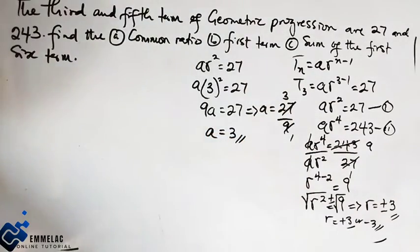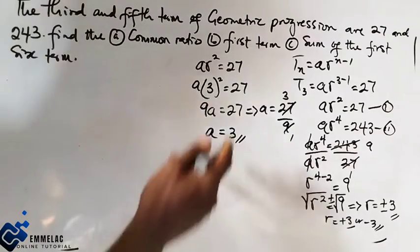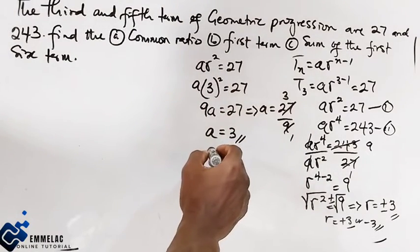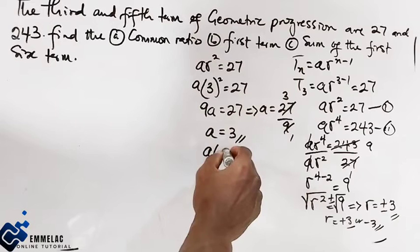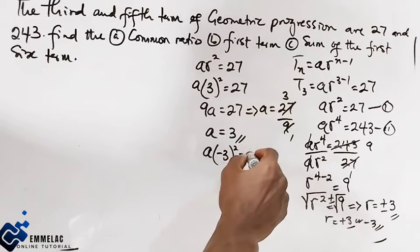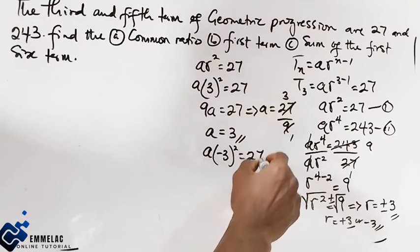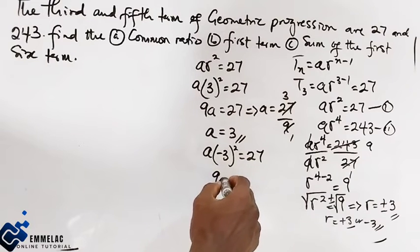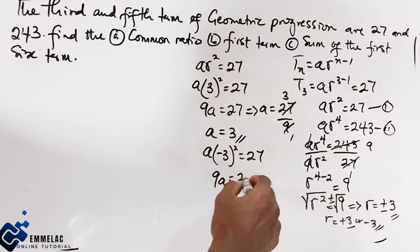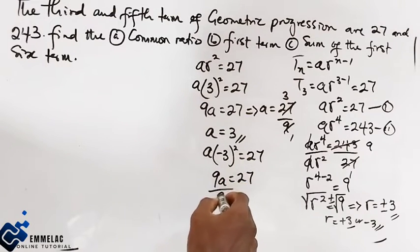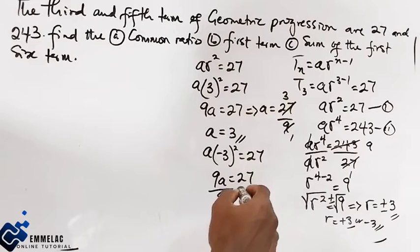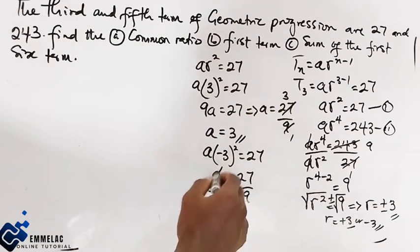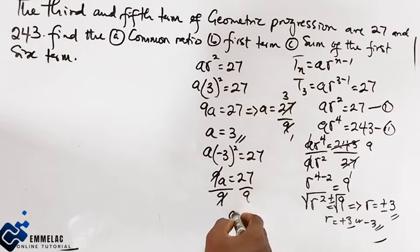For the negative value R equals negative 3, we apply the same rule: A times R² equals 27, so 9A equals 27. Dividing both sides by 9, A equals 3. So in both cases, A equals 3.